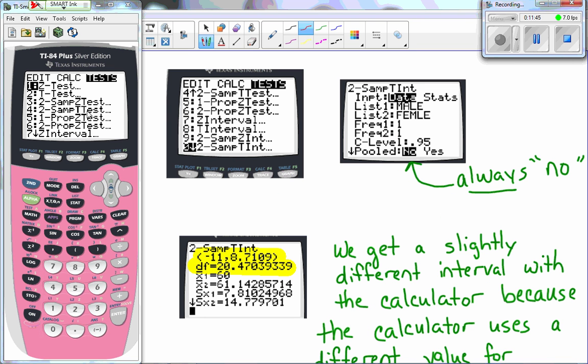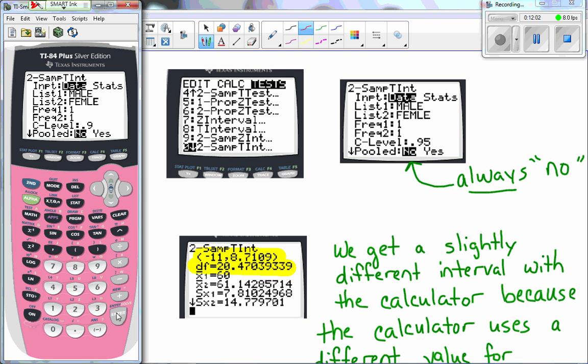On your calculator, if you go stat, test, now we're looking for a two-sample t-interval. So you have to keep going until you find it. So here it is, a two-sample t-interval. So I choose that. It saves my information there, but I do need to change the confidence level. So I'm going to go down and do that. And pooled, remember, is no. And calculate.